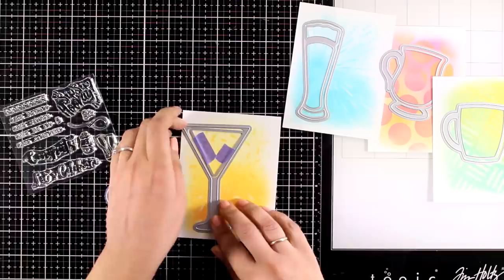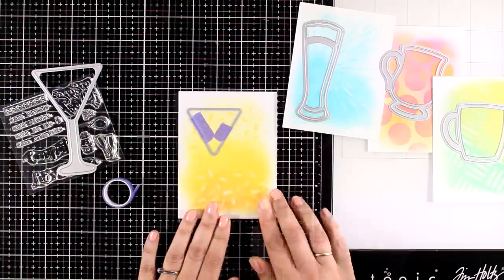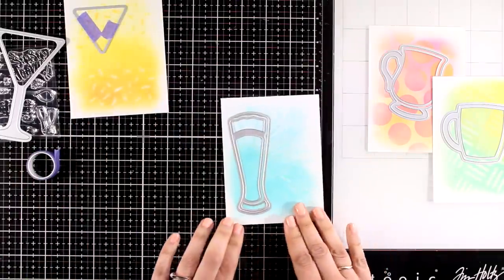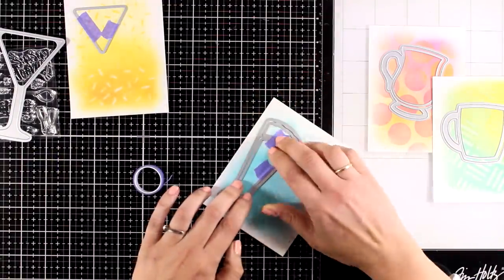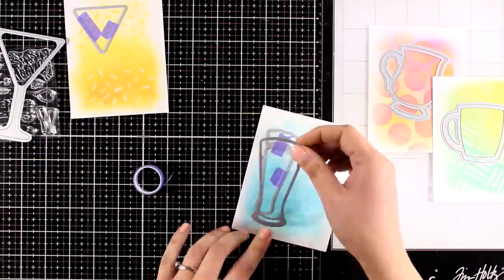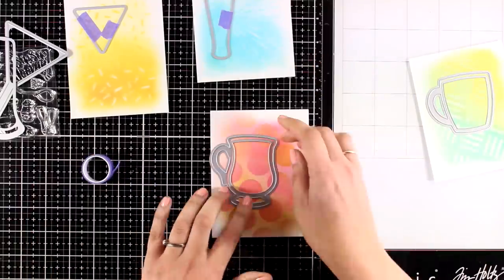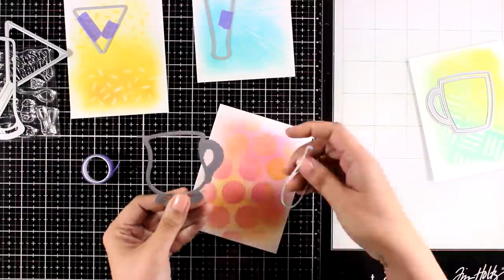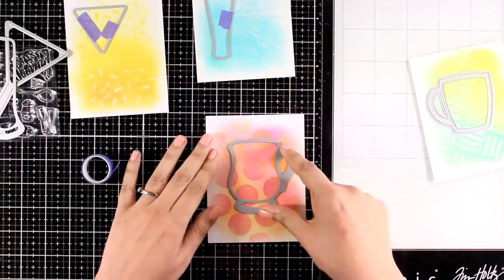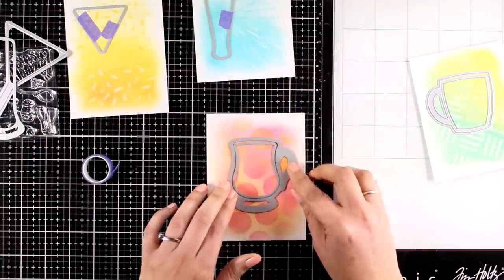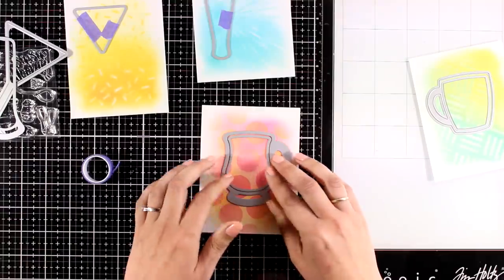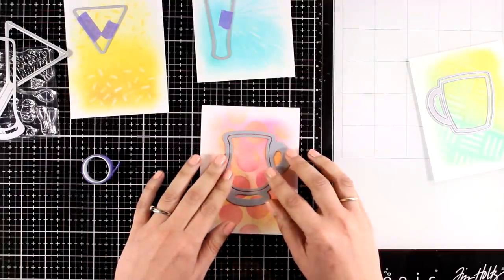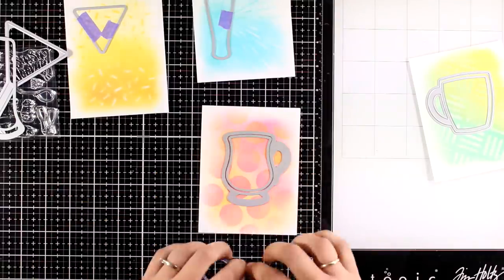So now I am going to place the dies wherever I need them to go and always use the outside die just so you make sure that it is going to fit after you cut out the inside window. So I am taping only the inside part and now I am going to move on to the next one. Again I am going to decide where I want this to go and tape down only the inside.